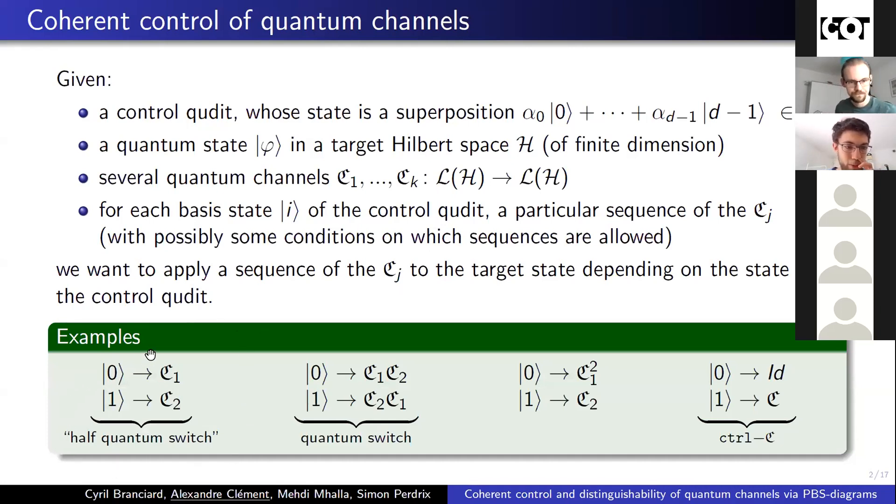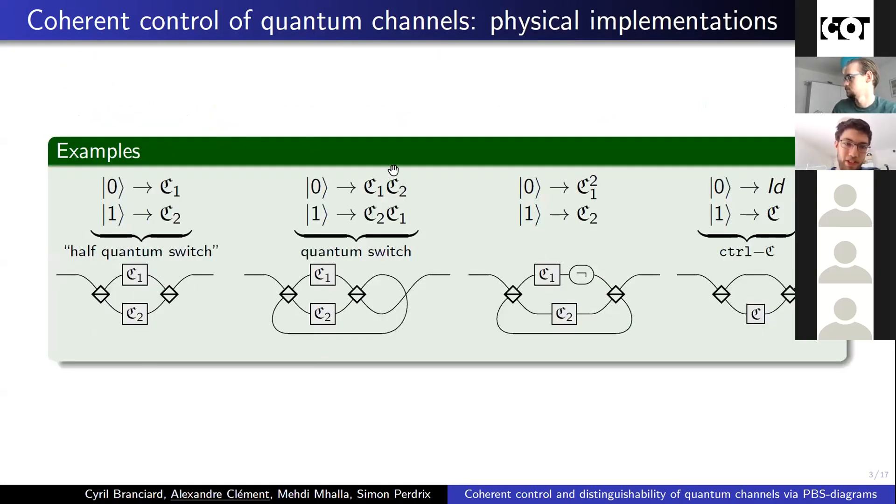Some simple examples. A channel for each basis state is not simple. In the quantum switch, we control the order of the two channels using the control qubits. We also look at cases where our channel can be repeated twice. All of these examples can be realized quite easily with quantum optics, physically.